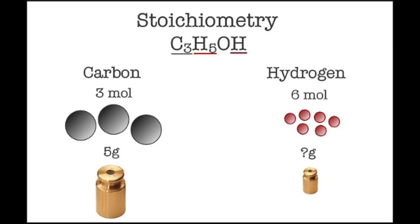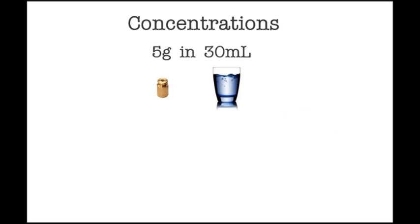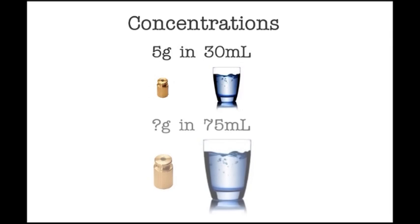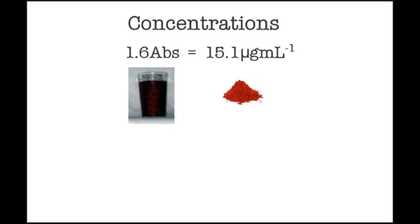Our fourth example looks at concentrations. If there are five grams of solute dissolved in 30 mils of solvent, then the amount dissolved in 75 mils will be proportionally larger.